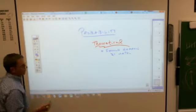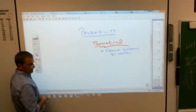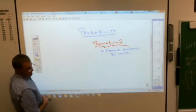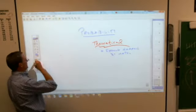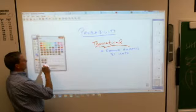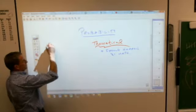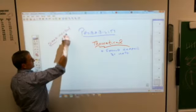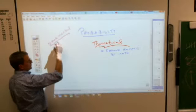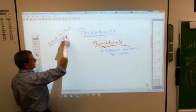The opposite of theoretical probability, it's not really the opposite, is experimental probability. And we don't have to write that down, but that's a whole different thing. Experimental is what really happens. Experimental is what happens when you do the experiment.